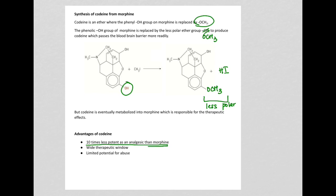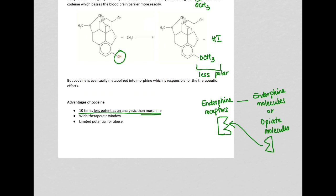These receptors cannot distinguish between natural molecules of endorphin or the opiate molecules. These opiate molecules and those natural endorphin molecules have the same active constituent. So the endorphin receptors bind to these opiate molecules. And as these bind, they produce dopamine. Dopamine is responsible for giving the brain that feel-good effect.